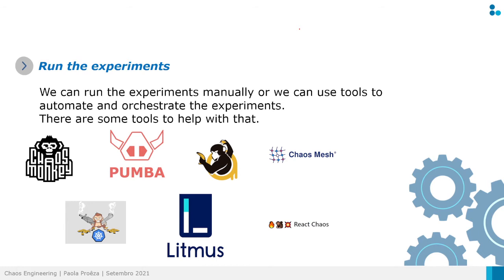The first tool is ChaosMonkey. ChaosMonkey is a tool that is part of a project called Simian Army, created by Netflix. ChaosMonkey randomly disables instances and services, testing fault tolerance in the cloud, and is currently used on AWS cloud.